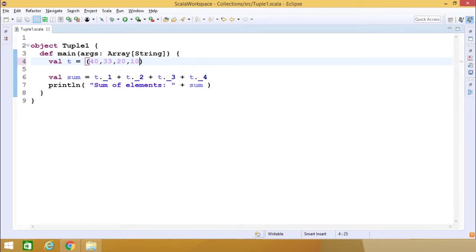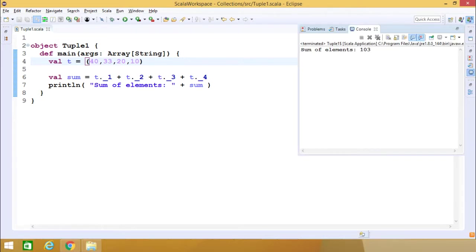Upon execution, you can find that the output is 103. Why 103? Because 40 plus 20 plus 10 gives us 70, plus 33, so that is 103. In this way, I have given you the idea of how to define a tuple variable and how to access its members using t._<member_number>.